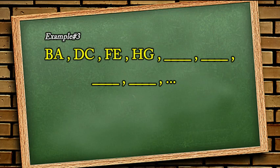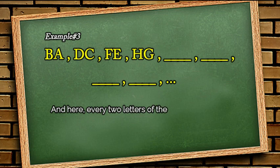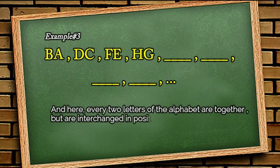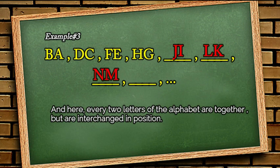And here, every 2 consecutive letters of the alphabet starting from E are together but are interchanged in position. The next terms are J, I, L, K, and M, and P, O.